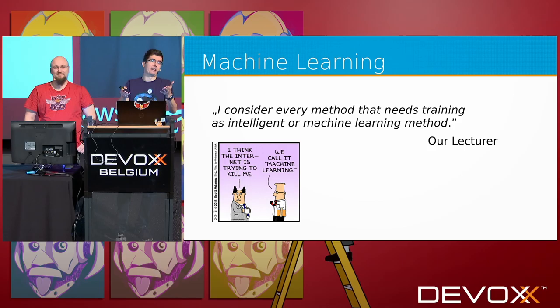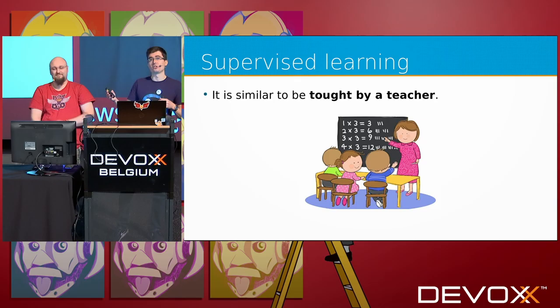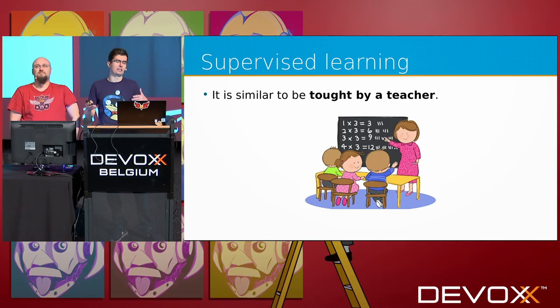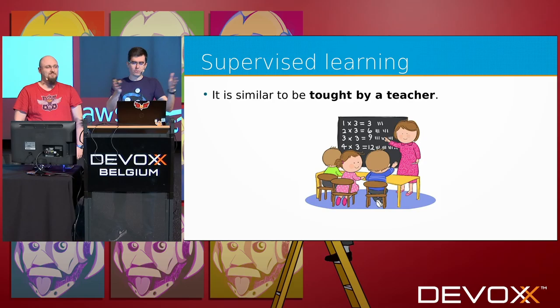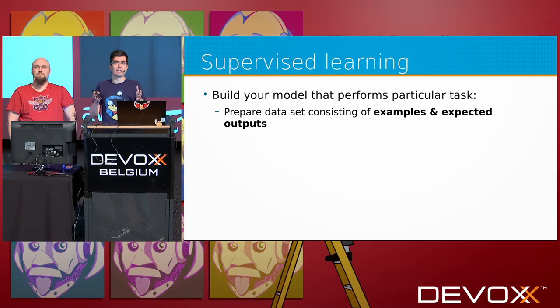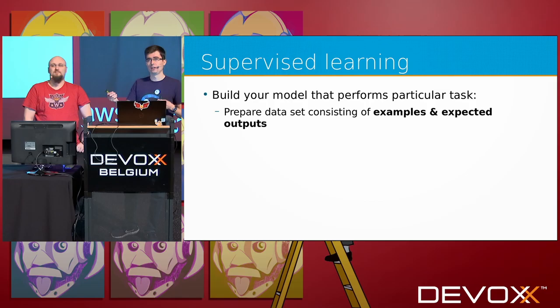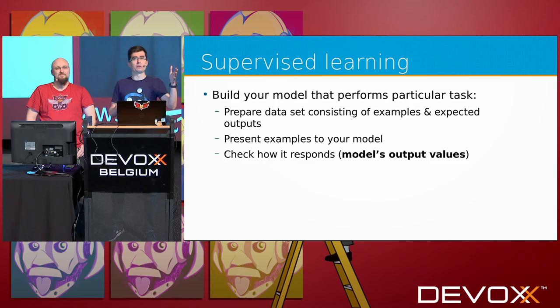That's machine learning in a nutshell. But it's easy to say 'make your computer learn' — how do you actually do it? You can't give it a book and say 'learn.' So let's look at supervised learning. We can compare it to being taught by a teacher — at school, our teacher gave us examples with correct answers, and we generalized from them. The same applies to supervised learning: we need a mathematical model, a dataset with examples and correct answers, and then we adjust the model parameters so it responds correctly.